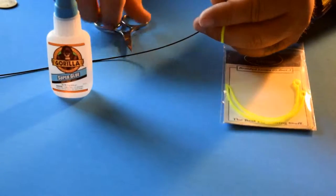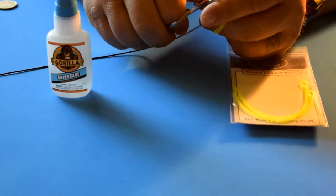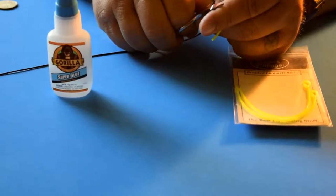Number one, take your fly line and cut it at a bit of an angle. This just helps it feed into the braided loop a little bit easier.